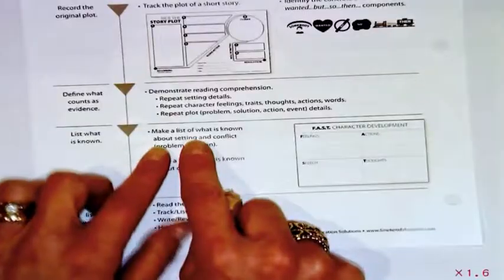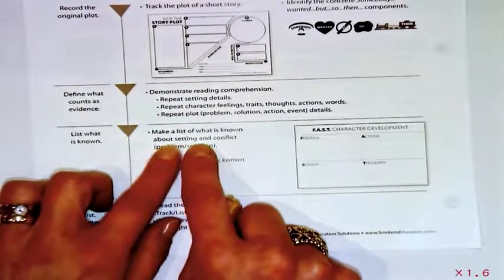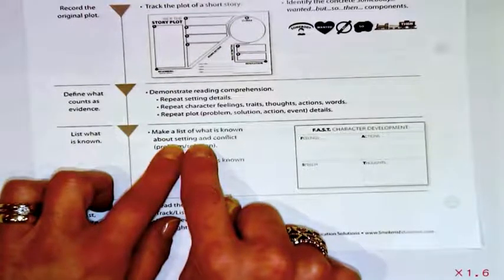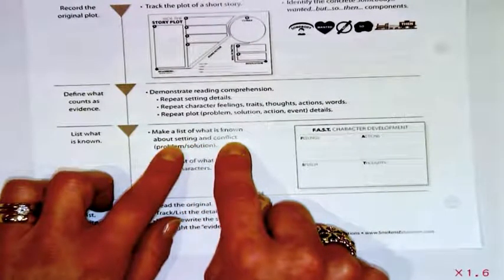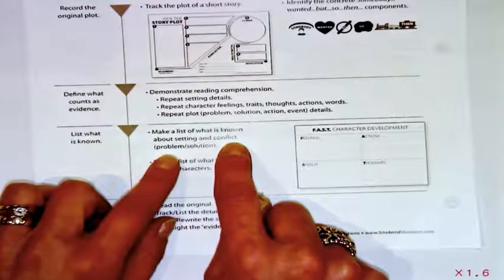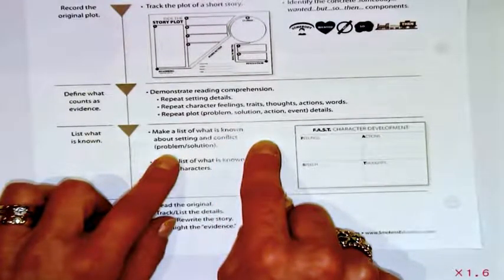Which leads us to this next bullet or triangle on our scaffold. Kids should make a list of what is known. What do we know about the setting? We know it's cold. We know it's winter. Any of those words you can weave in. What do you know about the problem? Any of those words or phrases you can weave in? Do it.